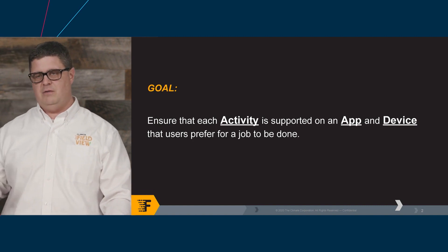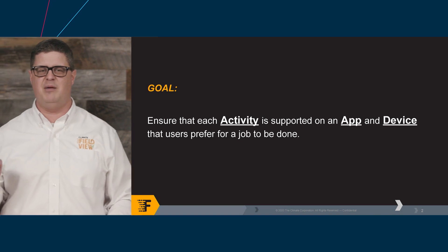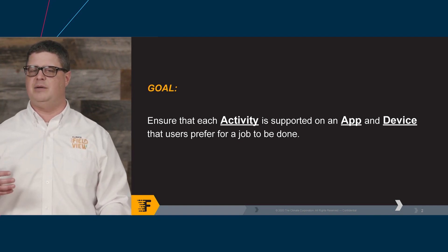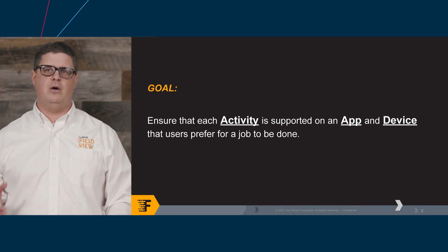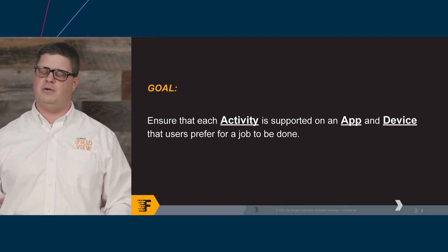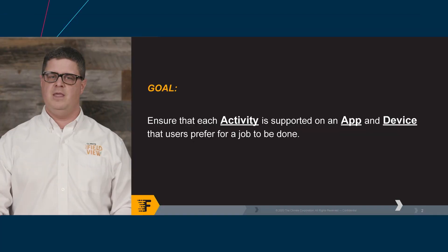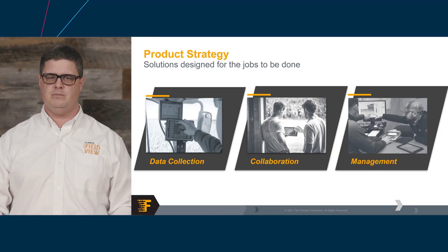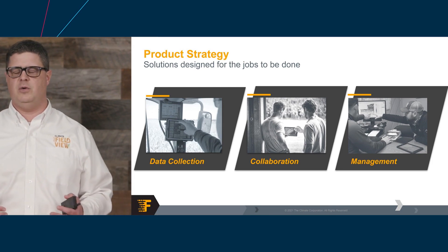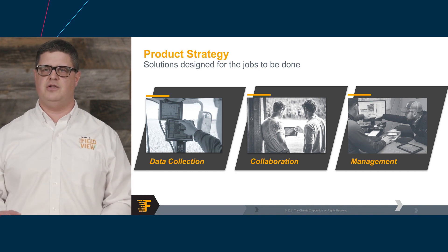As you've been thinking about everything we've learned today, there have been some very key points brought up that I want to highlight in some product updates that we're thinking about and the product strategy we're really trying to put in place. When we look at the product strategy, we've really been focusing on three key areas: data collection, collaboration, and management.